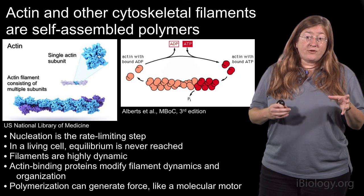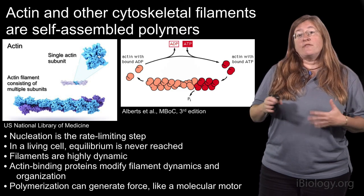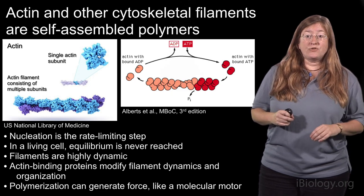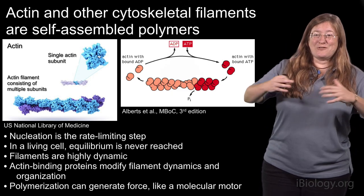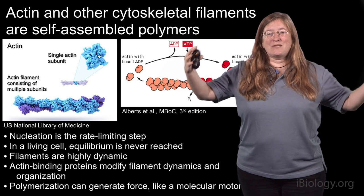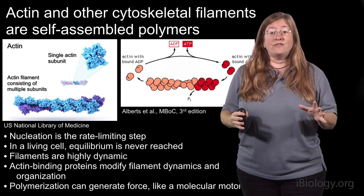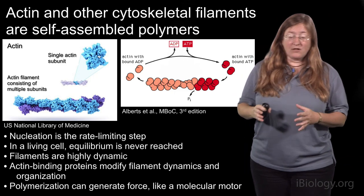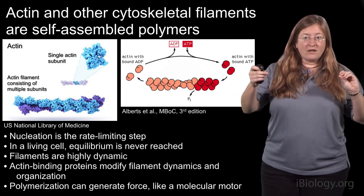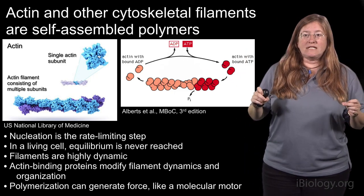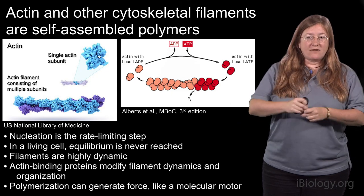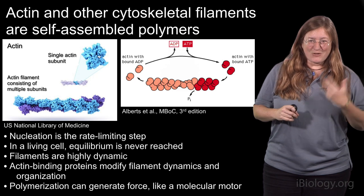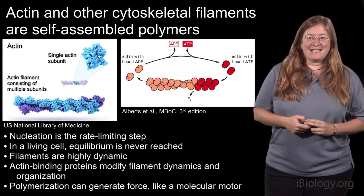In the kinds of rapidly moving cells we're going to be focusing on, the average half-life of the filaments is on the order of a few tens of seconds or maybe a few minutes at most. They're organized by literally hundreds of different kinds of actin-binding molecules that bind along the filaments, regulate their assembly and disassembly, cross-link them, sever them, bundle them together — anything you can imagine that a protein can do to these filamentous structures, there's probably some protein out there that does it.